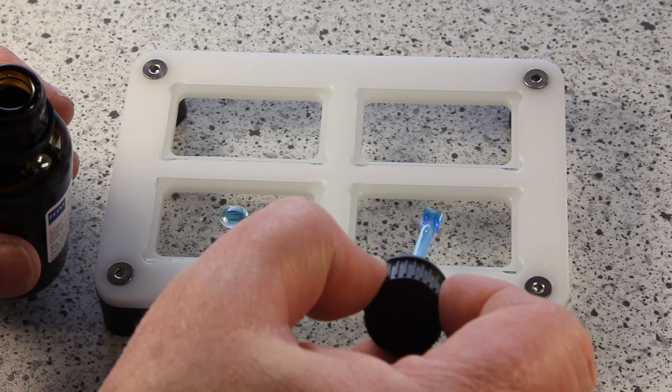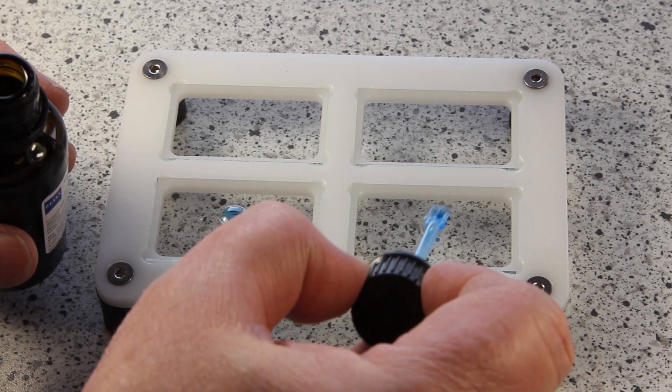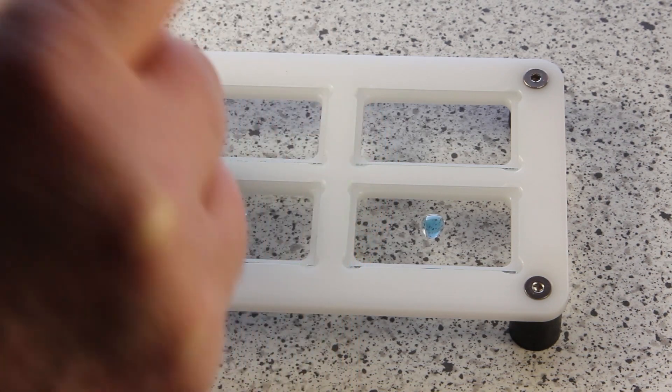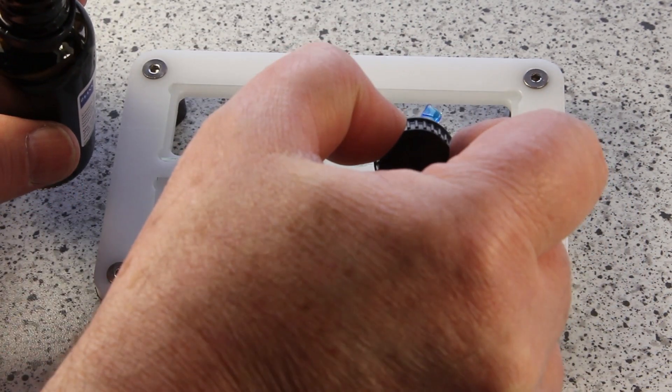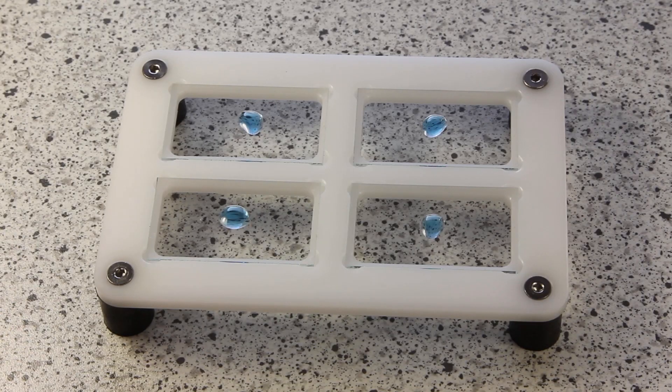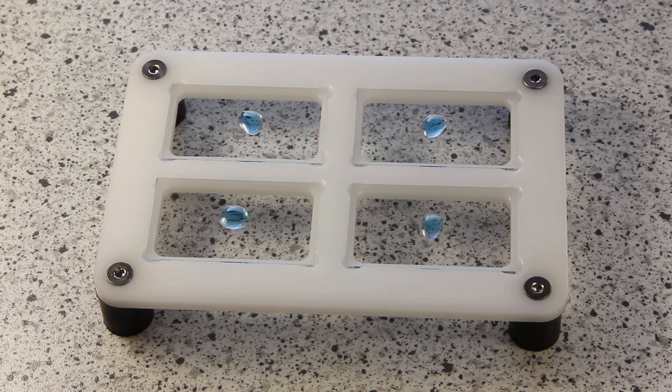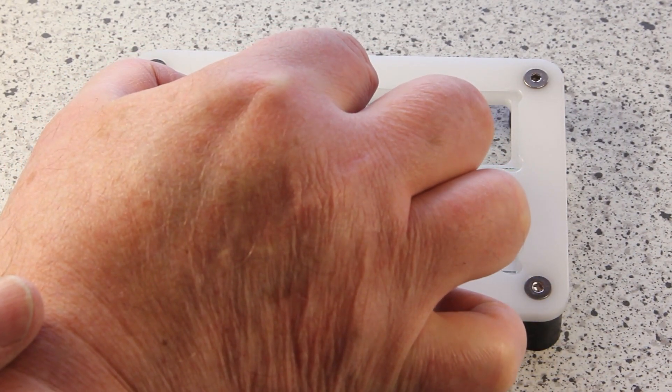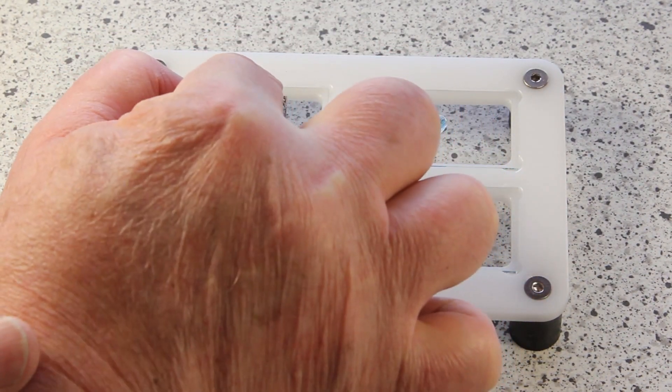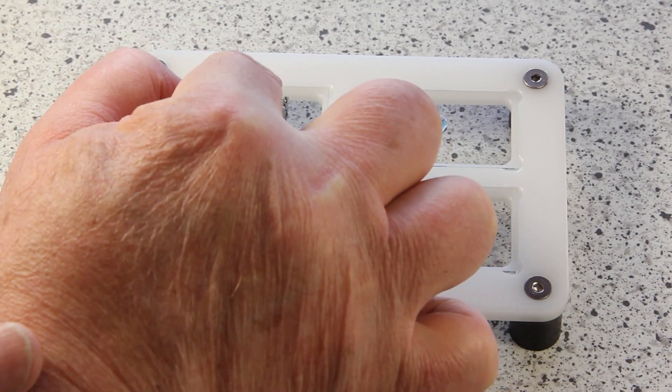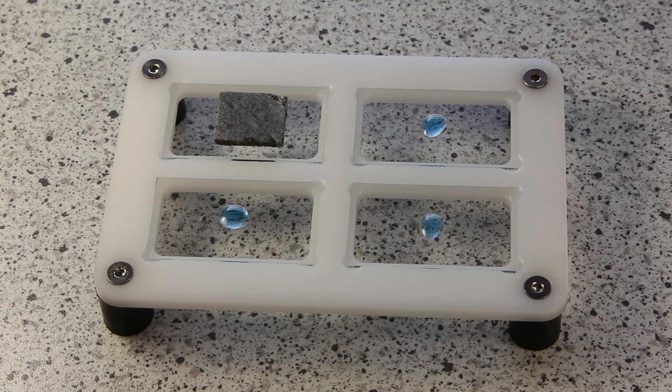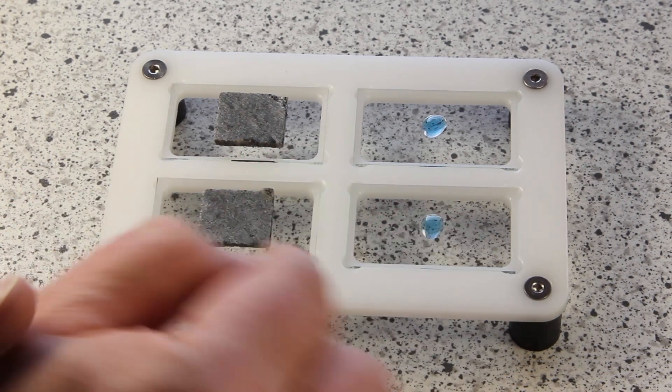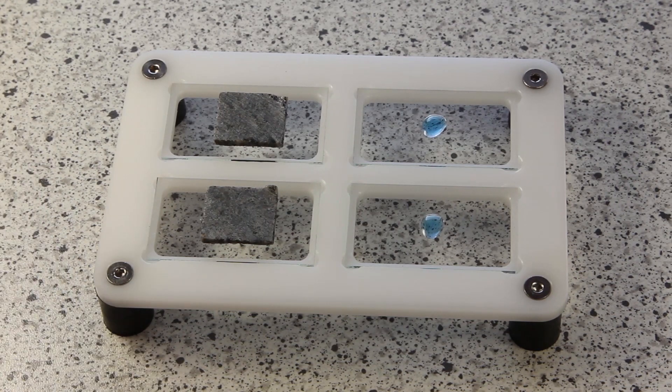I put a little drop of EPOSPIT-S on the middle of each slide. The uncured EPOSPIT-S is blue. And now I collocate on each slide a sample with a flat side down, like this, straight in the middle.